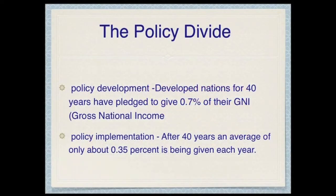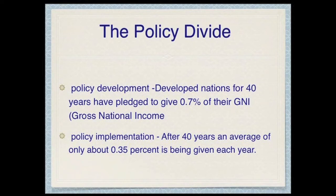The second is what they call the policy divide. In policy development, we find the developed nations, going back 40 years ago in 1970, pledged to give 0.7% of their GNI — gross national income — to help the developing countries of the world. But the actual implementation of that policy has not been quite as good. After 40 years, the average is only about 0.35% being given each year. Forty years later, and these countries are only 50% of the way there.